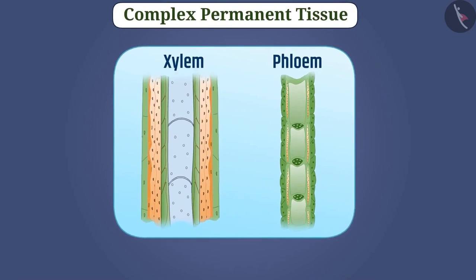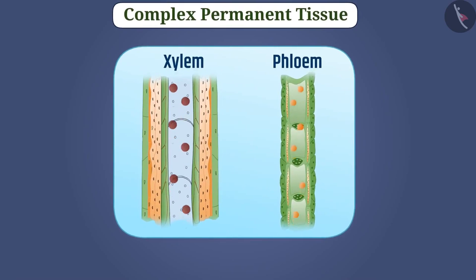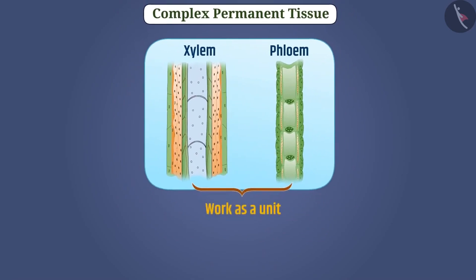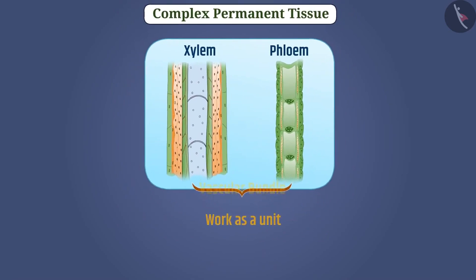In plants, xylem and phloem do transportation. These both together work as a unit and form a vascular bundle.